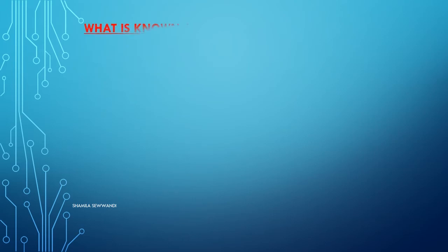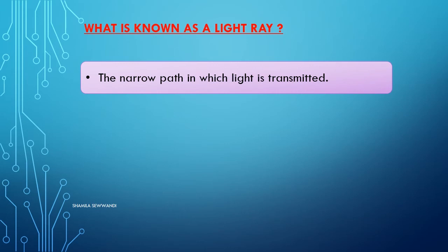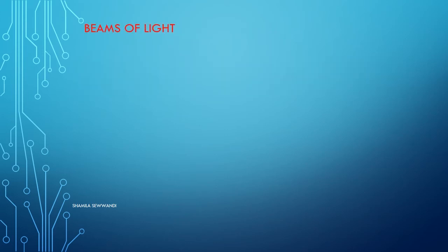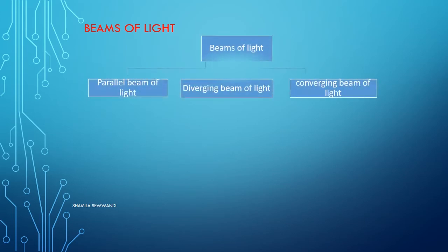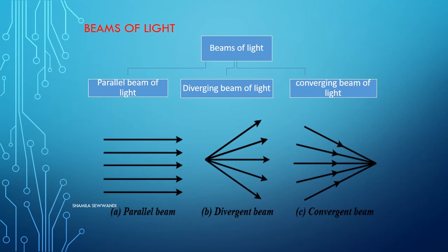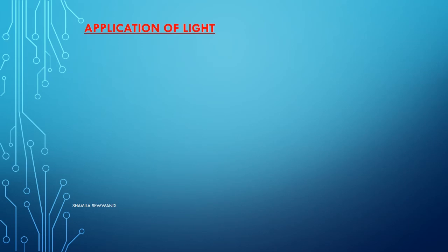What is known as a light ray? A narrow path in which light is transmitted is called a light ray. A collection of light rays is known as a light beam. Beams of light can be divided into three parts: parallel beams of light, diverging beams of light, and converging beams of light.